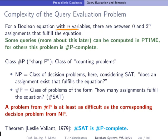And here we have, in this assumption, a Boolean equation with n variables. So there are between 0 and 2 to the n assignments that fulfill the equations. For some queries, it can be computed, how many of these fulfill, in PTIME complexity class. For others, this is sharp P-complete.